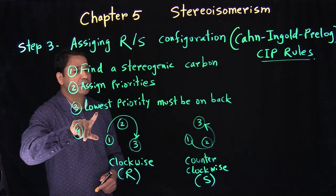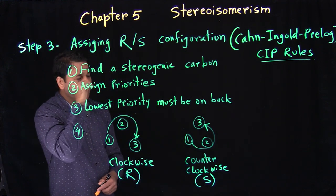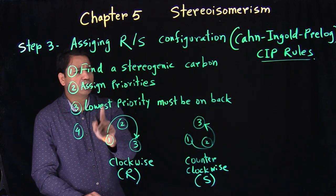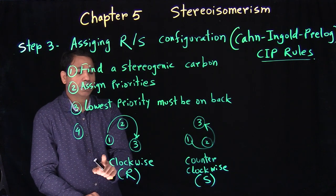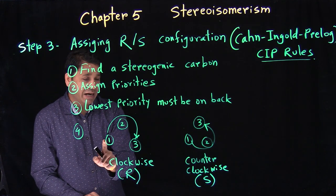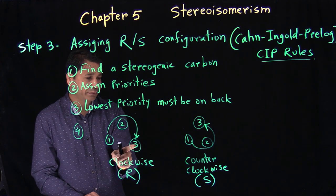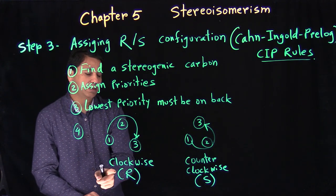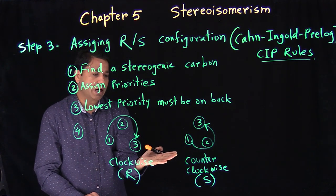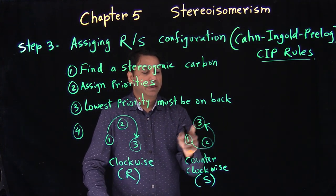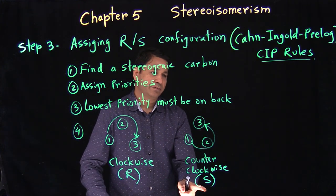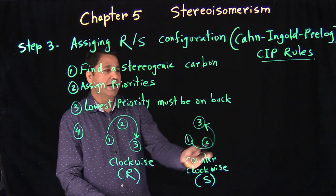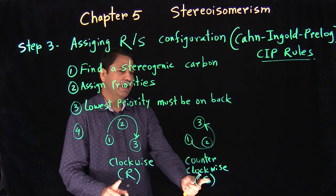The third point is that the lowest priority must be on the back — on the dotted wedge line, meaning below the plane. Then we connect priority one to two to three and see which direction we're going. If we're going clockwise, that is R. If we're going counterclockwise, that is S. So right is R and left is S.